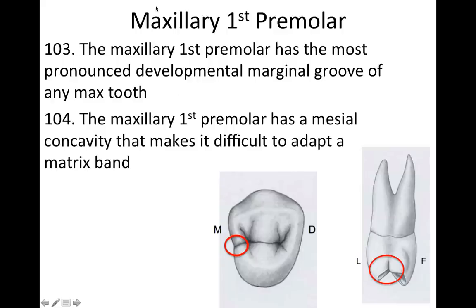The maxillary first premolar has the most pronounced developmental marginal groove of any maxillary tooth. Building on that, it also has a mesial concavity that makes it difficult to adapt a matrix band. Here we see the developmental marginal groove coming down, and on the mesial, if you look under the marginal ridge, there's a depression — a concavity — that would make adapting a Tofflemire band difficult.